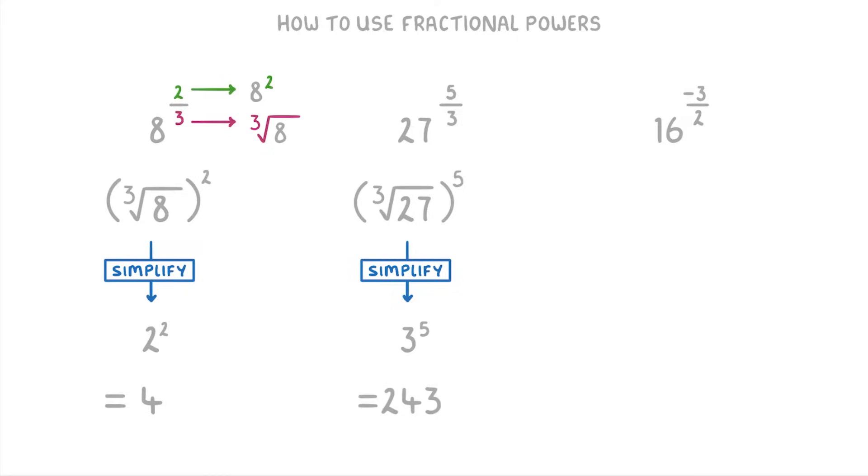This last one is a bit trickier because our fractional power is negative, so we have to sort that out first. If you remember from our previous video, whenever you have a negative power, all you need to do is flip the whole thing upside down, turning it into 1 over 16 to the power of negative 3 over 2, and then make the power positive.